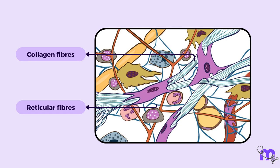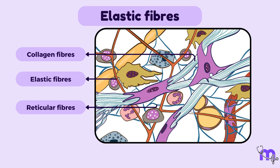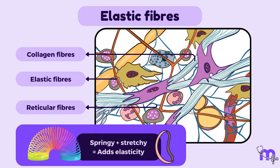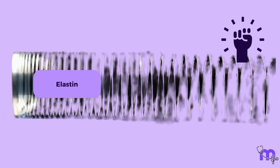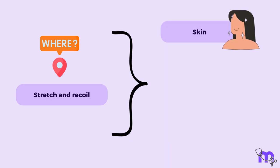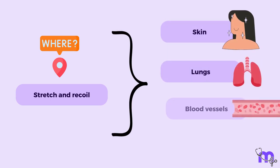Moving on to the next essential fiber of connective tissue — the elastic fibers. Elastic fibers are flexible and incredibly resilient. They are made up of a protein called elastin, which allows them to stretch and snap back into place. They are most commonly found in tissues that need to be able to stretch and recoil, like your skin, lungs, and blood vessels.